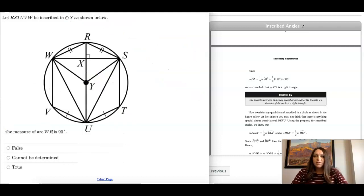Okay, so our next question has this giant shape, R, S, T, U, V, W inscribed in Y, and it's asking about the measure of the arc W, R, so it's asking if this arc length does that equal to 90 degrees? So this goes back to what we know about arc lengths.